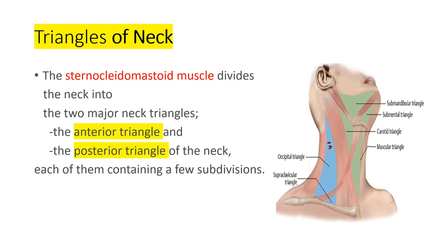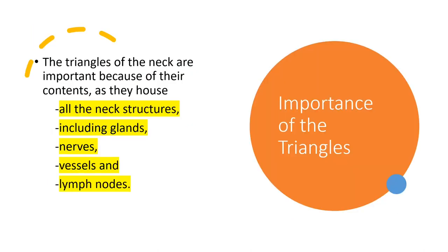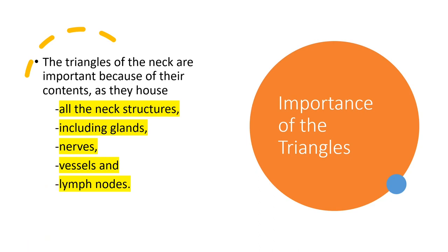This is the posterior triangle and this is the anterior triangle. The triangles of the neck are important because of their content. In the triangles of the neck, what things are included? All the neck structures are included — glands are included, there's a submandibular gland, sublingual gland, nerves, vessels, and lymph nodes.